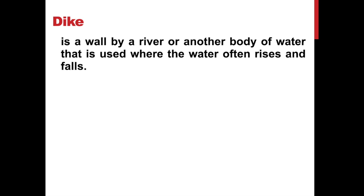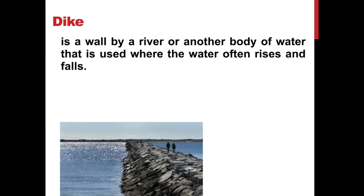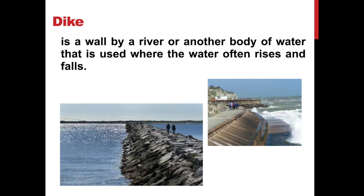The fourth one is a dyke. It is a wall by a river or another body of water that is used where the water often rises and falls. I'm sure you have seen this one. It could be made of rocks or concrete, and it is used to regulate or hold back water from a river, lake, or even the ocean.